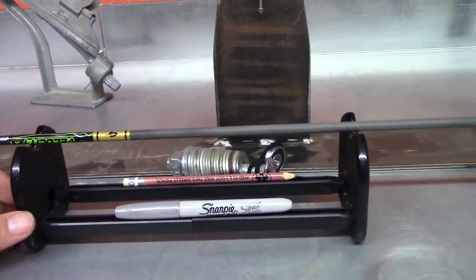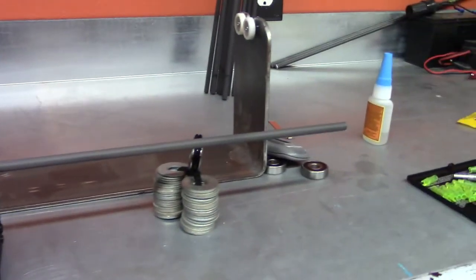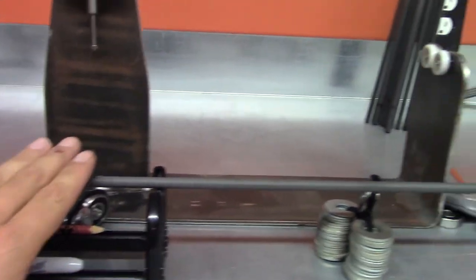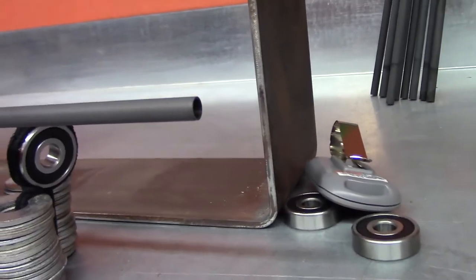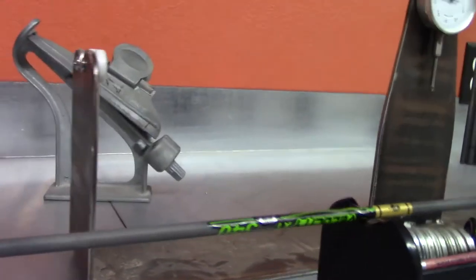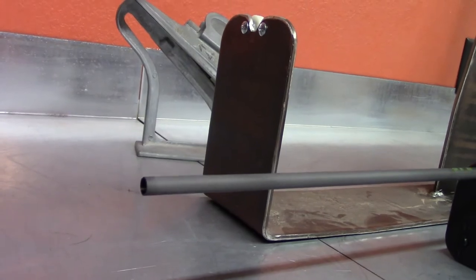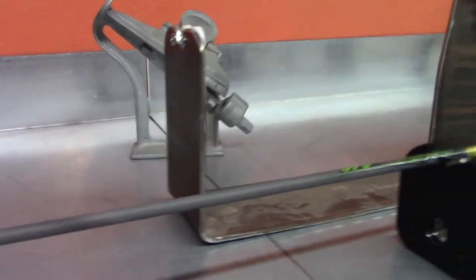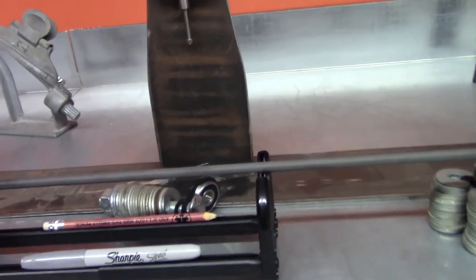This right here is what we call an arrow spinner. What I've got are just the shafts all the way down. What I do is I spin it and I'm looking on both ends to see which end has the most movement. That tells me which end is not so true, so that's the end I'm going to cut from.